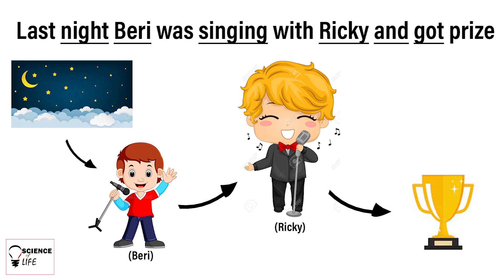Just look at the underlined words. Night — night makes 'Night Blindness.' Berry — the disease is 'Beriberi.' Singing — from singing we can make 'Scurvy.' From Ricky — the disease is 'Rickets.' Then coming to 'and' — 'and' is also underlined — from 'and' we get 'Anemia.' From 'got' — it is 'Goiter.' And 'prize' is just for making the sentence interesting.